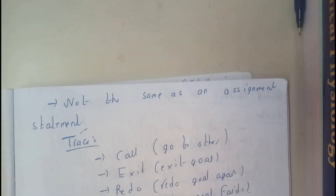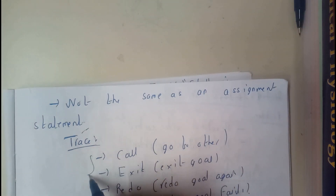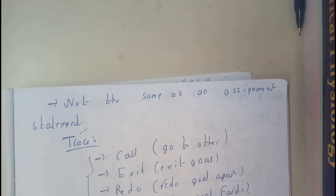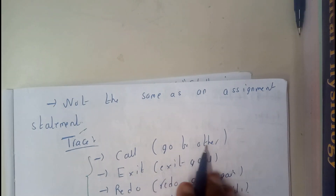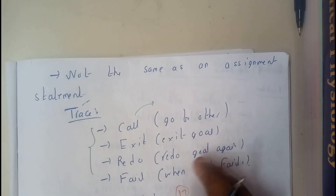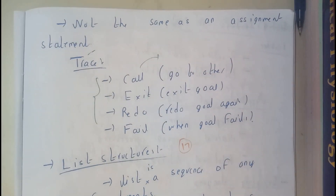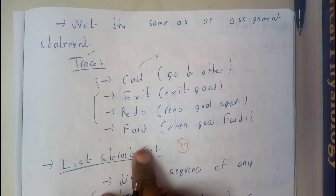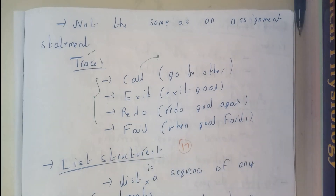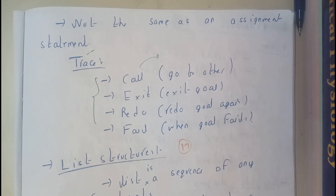Moving on to trace in Prolog — trace refers to the tracing of function calls. 'Call' means going to some other location to execute. 'Exit' means exiting from that particular goal. 'Redo' means redoing the goal that was just completed. 'Fail' is shown when a goal fails. In the next tutorial, we will go through Prolog itself and cover the list of structures in Prolog. Thank you.